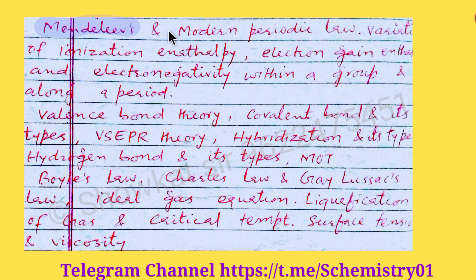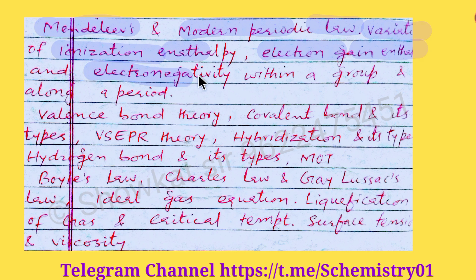In the Classification of Elements chapter, you will study Mendeleev's and the modern periodic law. Then you will study the various periodic properties — the variation of ionization enthalpy within a group and along a period. Similarly, electron gain enthalpy and electronegativity — you should be able to write the trend and variation shown within a group and along a period.